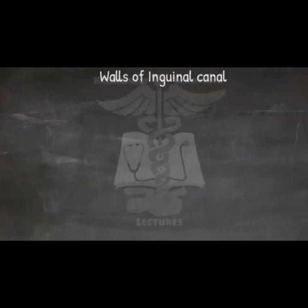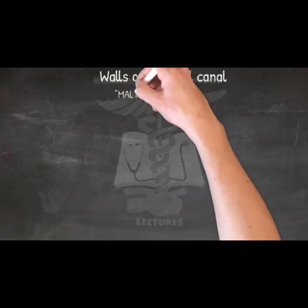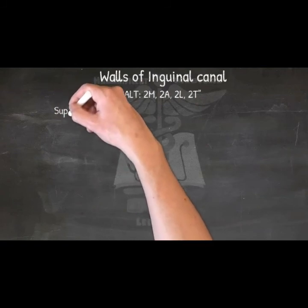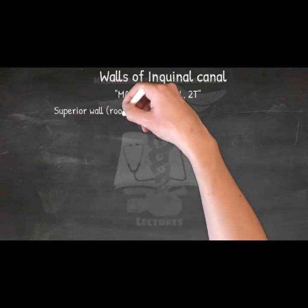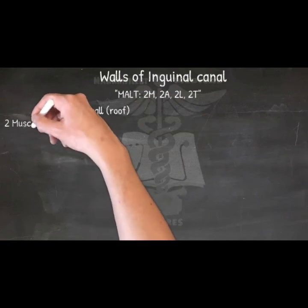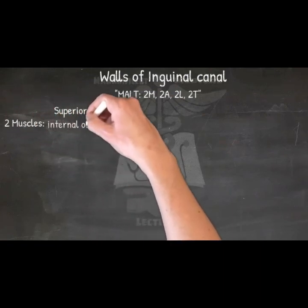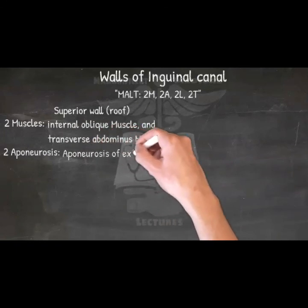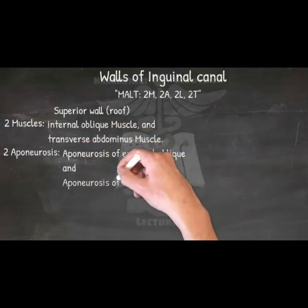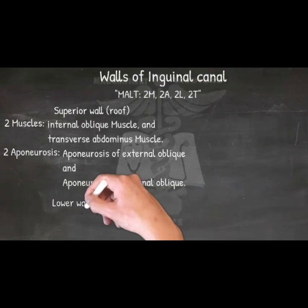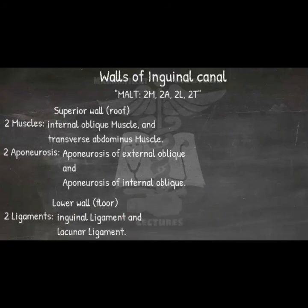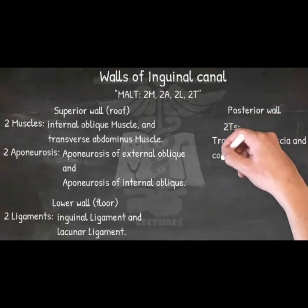Walls of the inguinal canal — mnemonic: 'MALT,' with 2M, 2A, 2L, 2T. Starting from superior, moving around to posterior: Roof (superior wall) — Muscles: internal oblique and transversus abdominis. Aponeuroses: of external oblique and internal oblique. Floor (lower wall) — two Ligaments: inguinal ligament and lacunar ligament. Posterior wall — Transversalis fascia and conjoint Tendon.